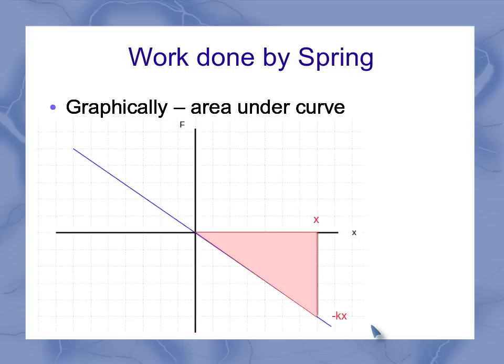Well, the area under the curve there is going to be a triangle. And the area of a triangle is 1 half base times height, where my base is x and my height is minus kx. Rearranging this just a little bit to combine my two x's and bring my minus sign out front, I have minus 1 half kx squared.